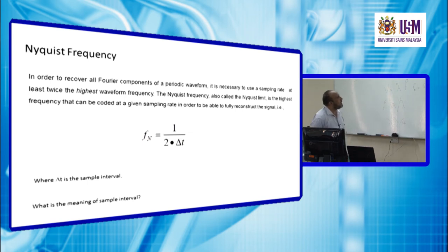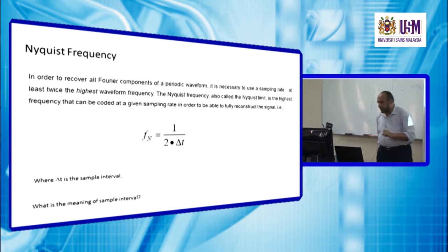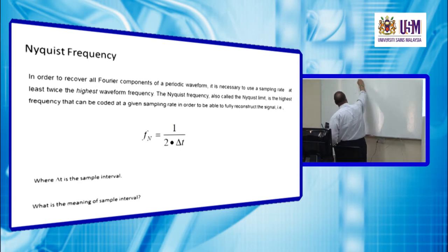What is the frequency? In order to recover all Fourier components of a periodic waveform, it's necessary to use a sample rate at least twice the highest waveform frequency. This signal can be digitized significantly using two points, one here and the other here. This definition means the sample rate should be at least twice the highest waveform frequency we are trying to represent in our sampling, because each cycle requires at least two points to be sampled.